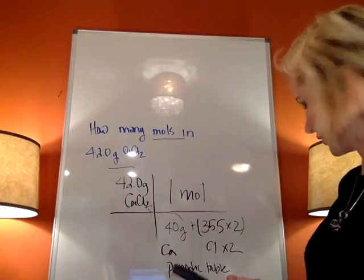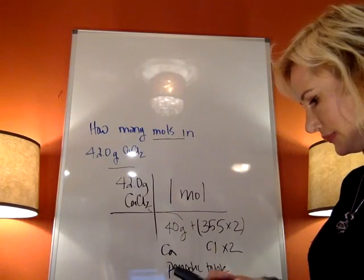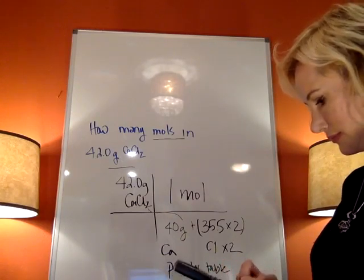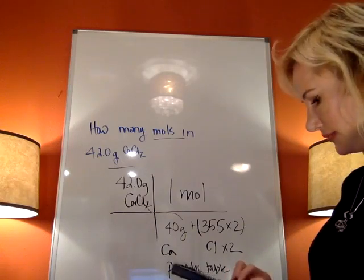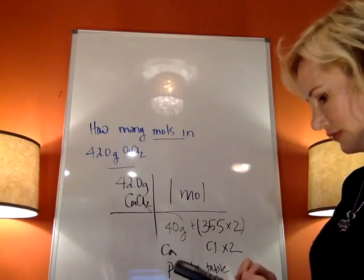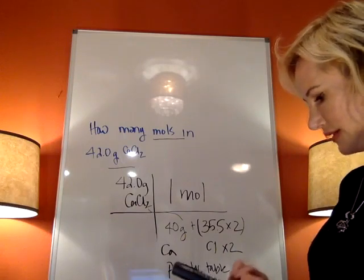So I'm going to do 42 divided by parentheses 40 plus 35.5 plus 35.5.